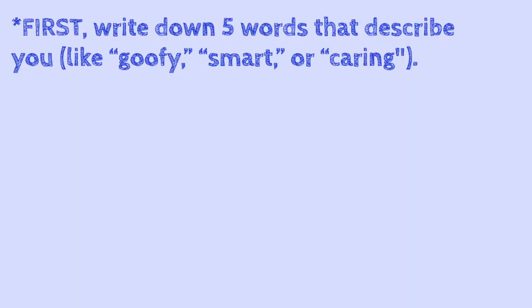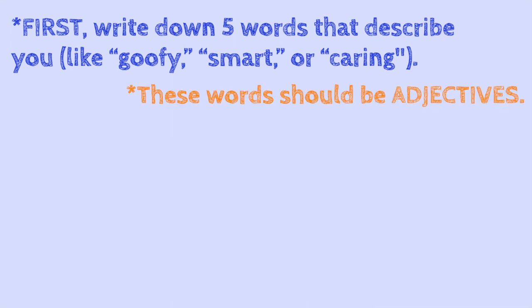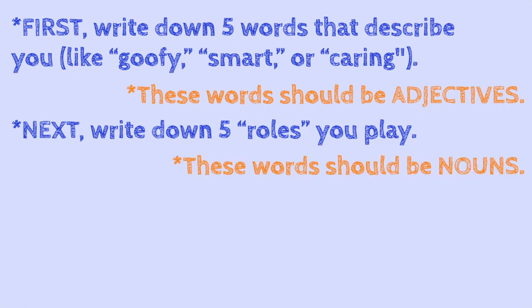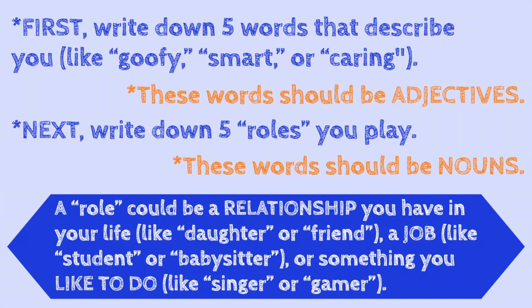In the first column, write down five words that describe you — like goofy, smart, or maybe caring. These words should be adjectives. Next, in the second column, write down five roles you play in your life. These words should be nouns. A role could be a relationship you have, like daughter, sister, or maybe friend. A role could be a job, like student or babysitter. Or a role could be something you like to do, like soccer player, singer, or gamer.